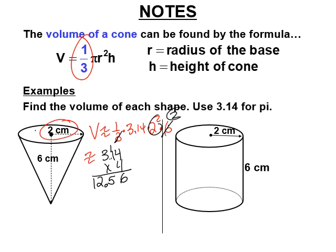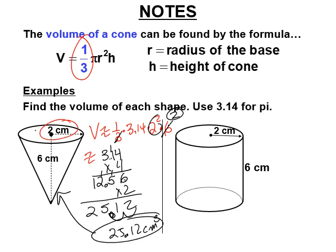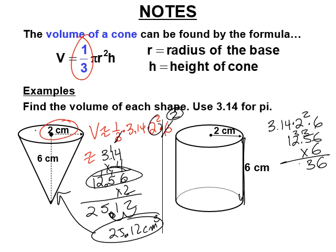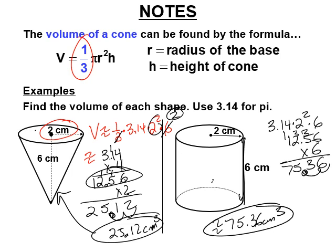Since we canceled the 3 with the 6, we just multiply 12.56 times 2, getting 25.12 cubic centimeters in the cone. For the cylinder with the same dimensions — no one-third — it's 3.14 times 4 times 6, giving 12.56 times 6, which is 75.36 cubic centimeters. Three times as much fits in the cylinder.